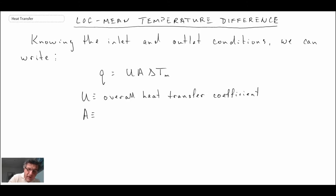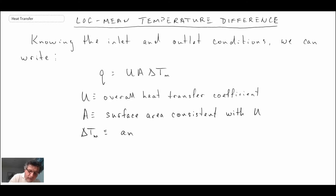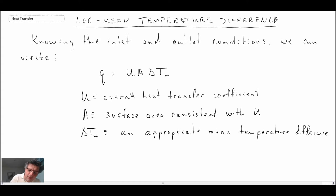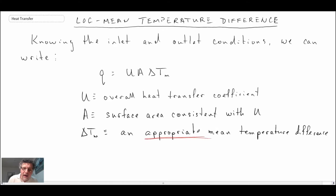A is the surface area corresponding to the way that U is defined — remember it could either be the inner or the outer area — and finally delta T_m. Delta T_m is an appropriate mean temperature difference, one that characterizes the temperature difference, since the two fluid streams are changing temperature as they flow through the exchanger. We're going to model it as a double pipe parallel flow arrangement heat exchanger, come up with a value for delta T_m, and then if you want to apply it to different types of heat exchangers, there's a correction factor F that is applied.